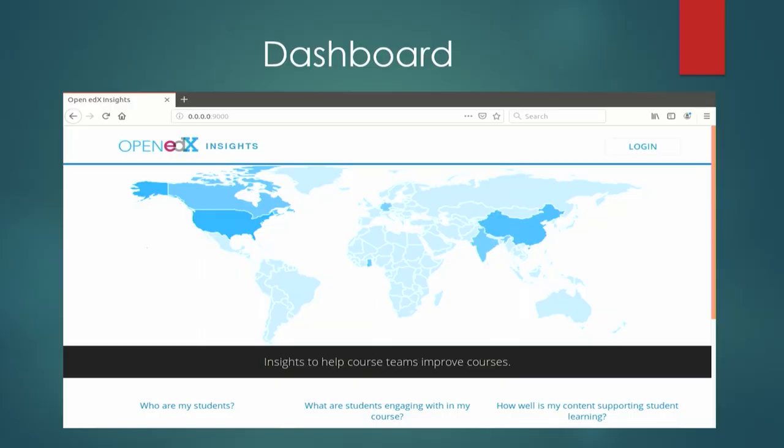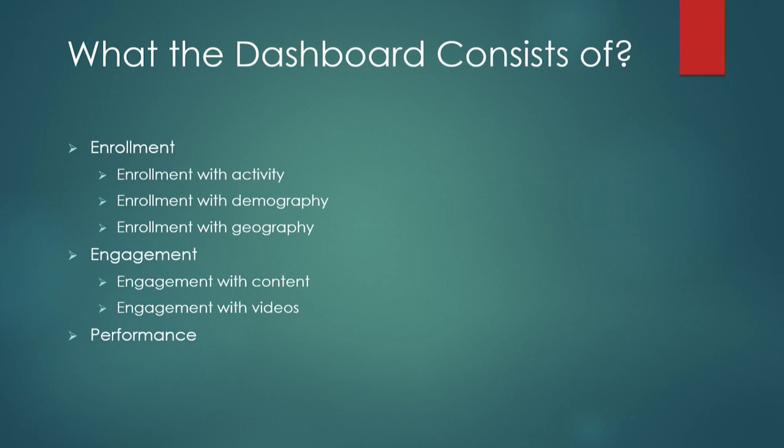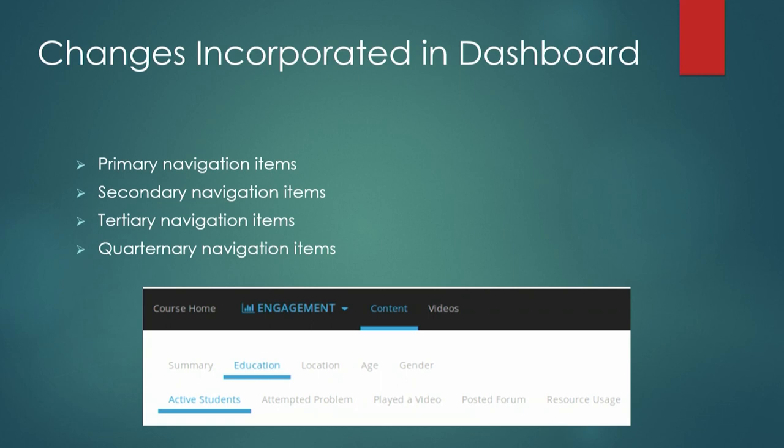The Open edX Insights dashboard presents course information and consists of enrollment, engagement, and performance sections. Enrollment covers activity, demographics, and geography; engagement covers content and videos. Our task was to segregate the content into gender, age, education, and location to view behavioral patterns based on activities like playing a video, being active, attempting a problem, participating in discussion forums, and resource usage.